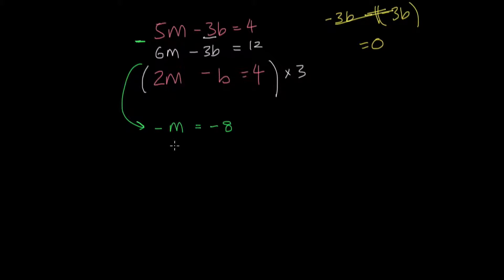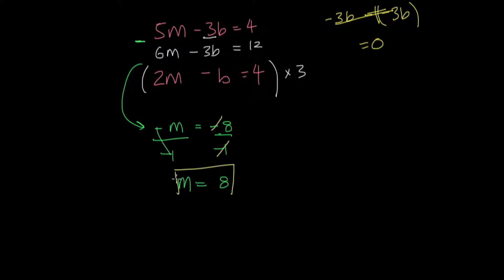Now all I want to do is get the value of m. So I'm dividing both sides by negative 1, and I'm left with m equals 8, because the negatives cancel out. So m equals 8. Now I want to substitute this value of m either into the first equation or the second, so I can get the value of b.